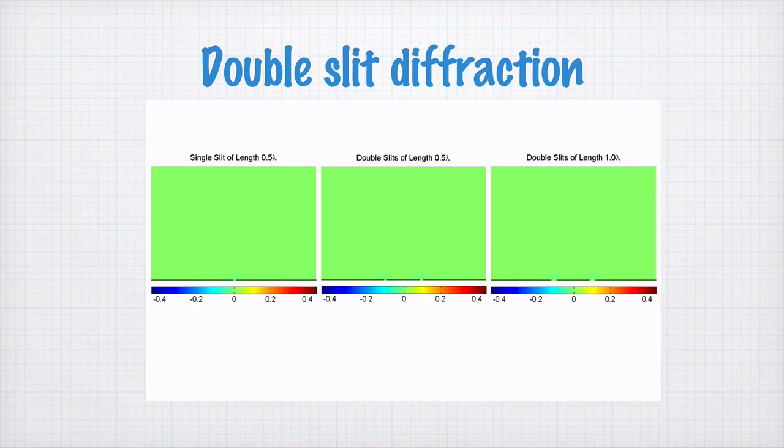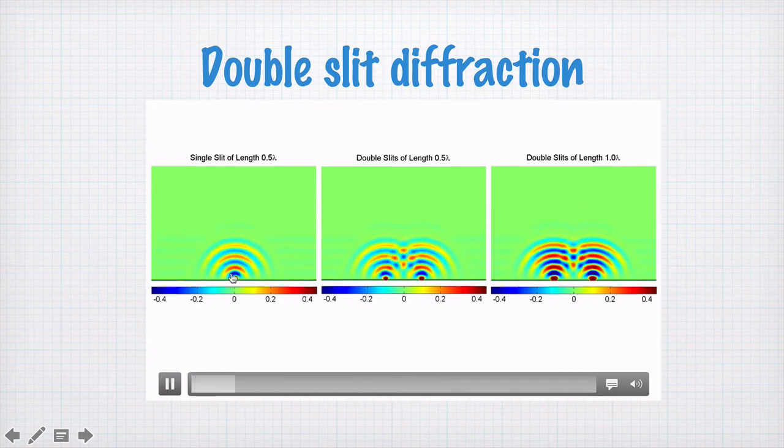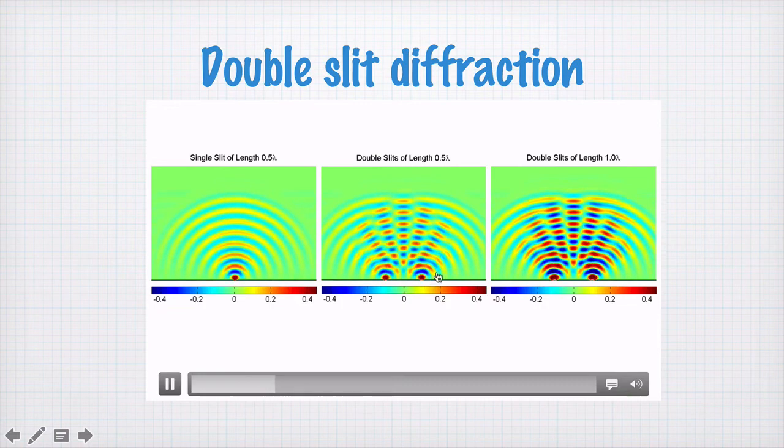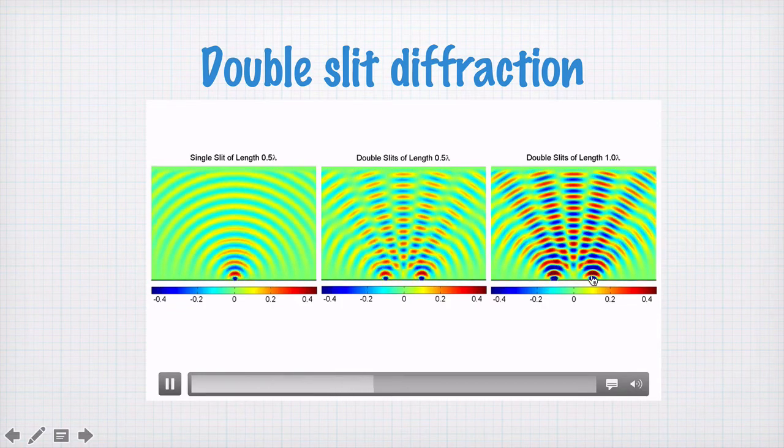The next type of diffraction we'll consider is double slit diffraction. Here are some animations. This is a single slit, then some very thin slits, and some thicker slits. Here we have the single slit diffraction with basically circular waves, double slit diffraction with thin slits, and double slit diffraction with thicker slits.